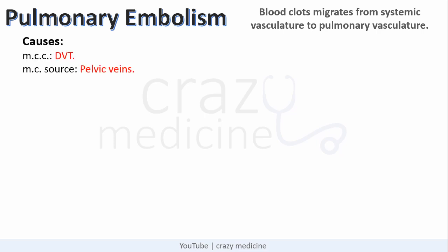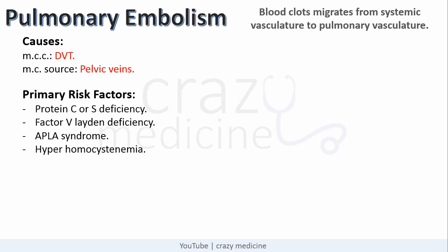The most common cause of pulmonary embolism is DVT, that is deep vein thrombosis, and the most common source is pelvic veins. Everything marked in red color is an important MCQ point. Primary risk factors include protein C or protein S deficiency, factor V Leiden deficiency, APLA syndrome, and hyperhomocysteinemia. These four basically lead to a prothrombotic state. APLA syndrome is the most common acquired cause of prothrombotic state.